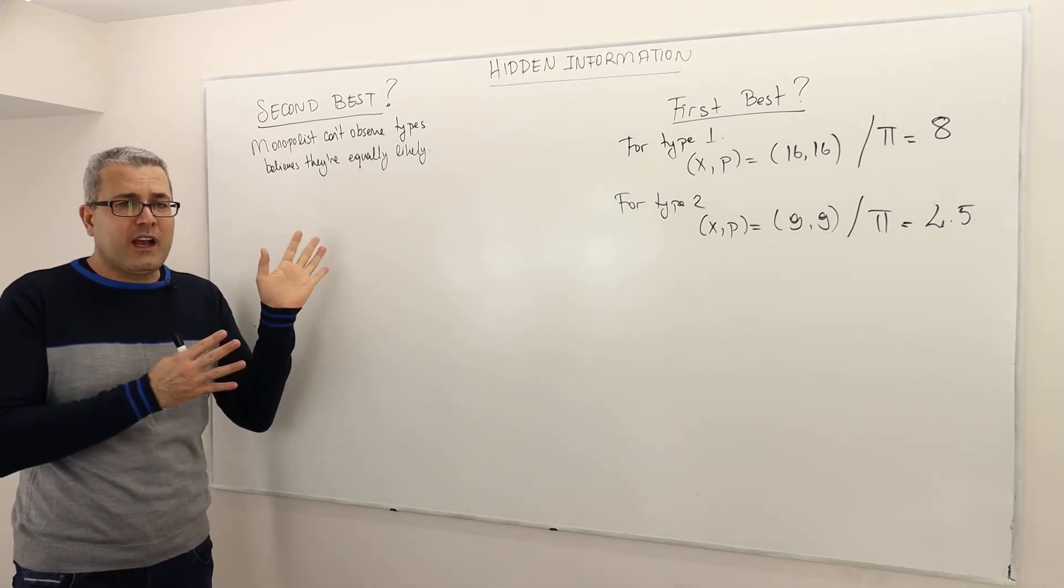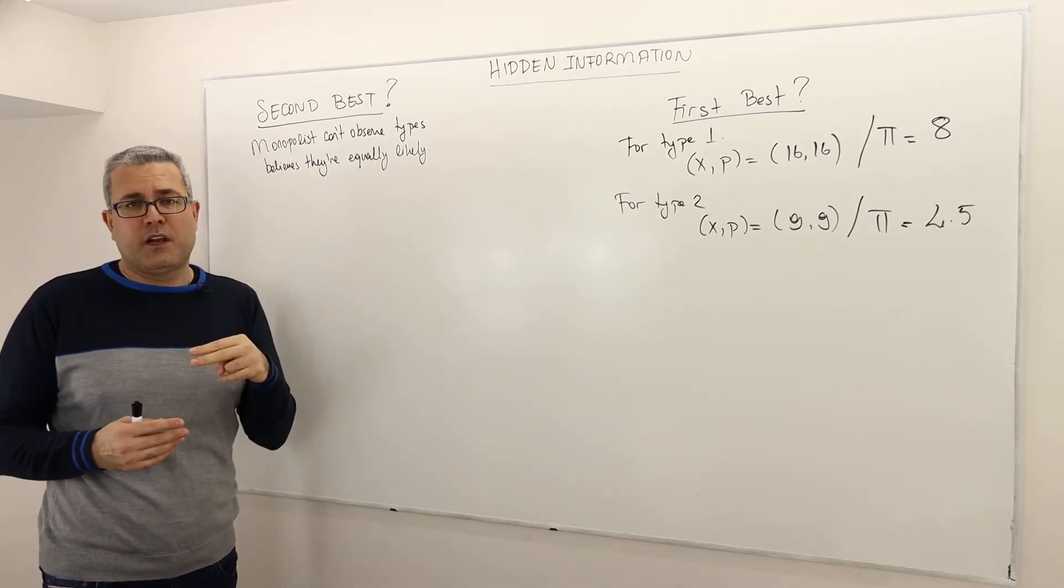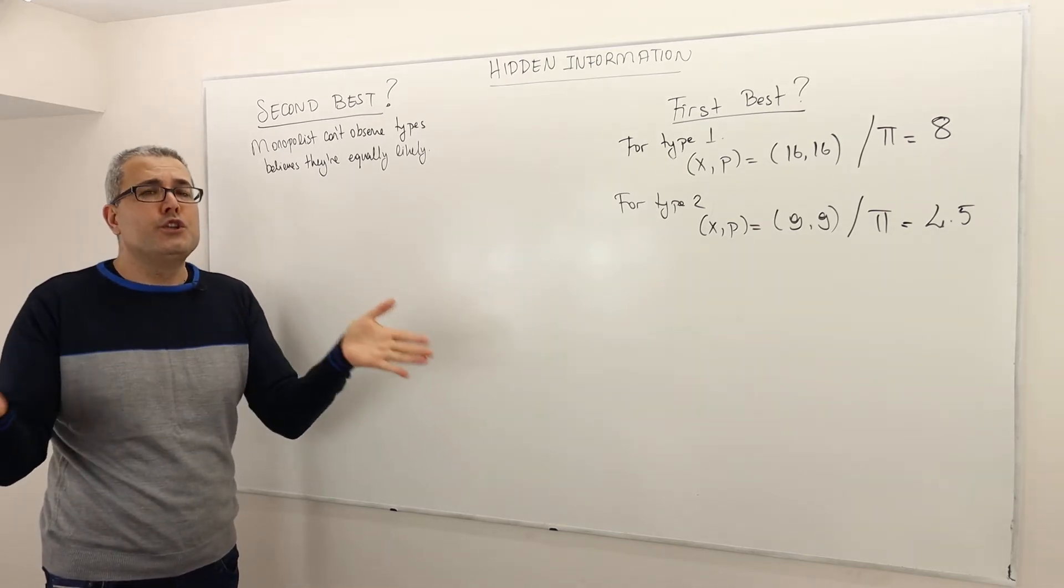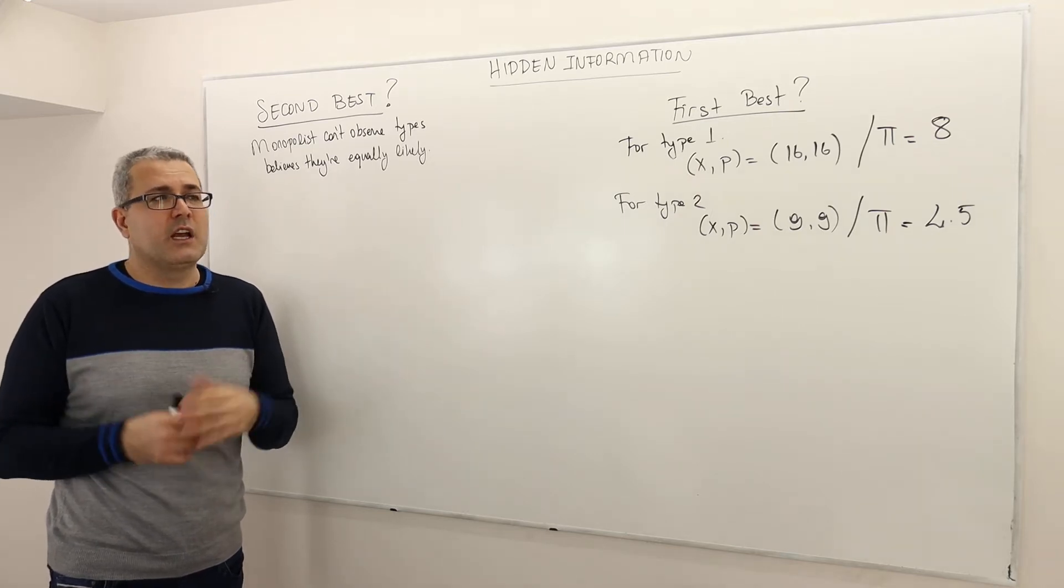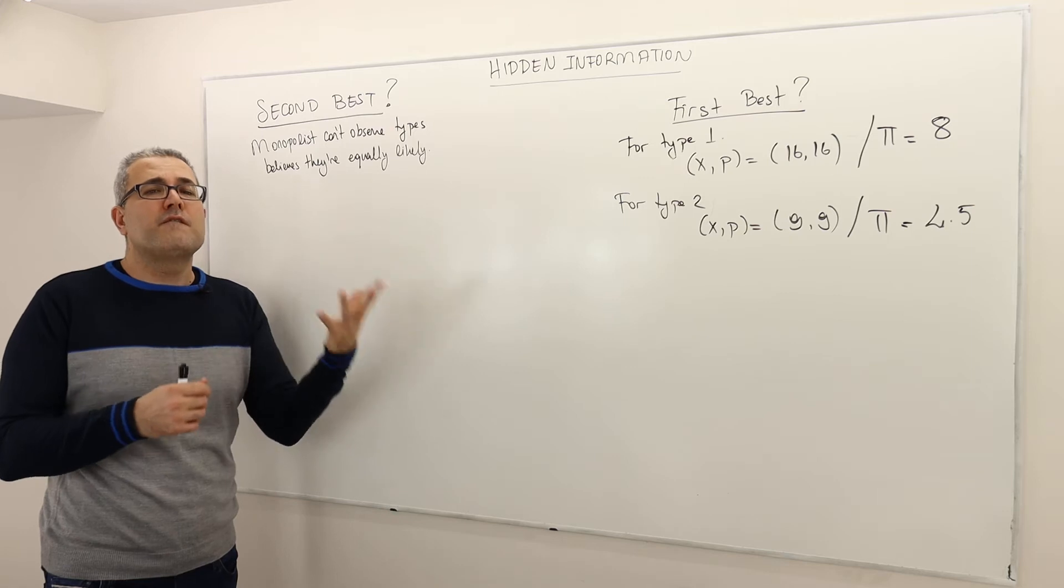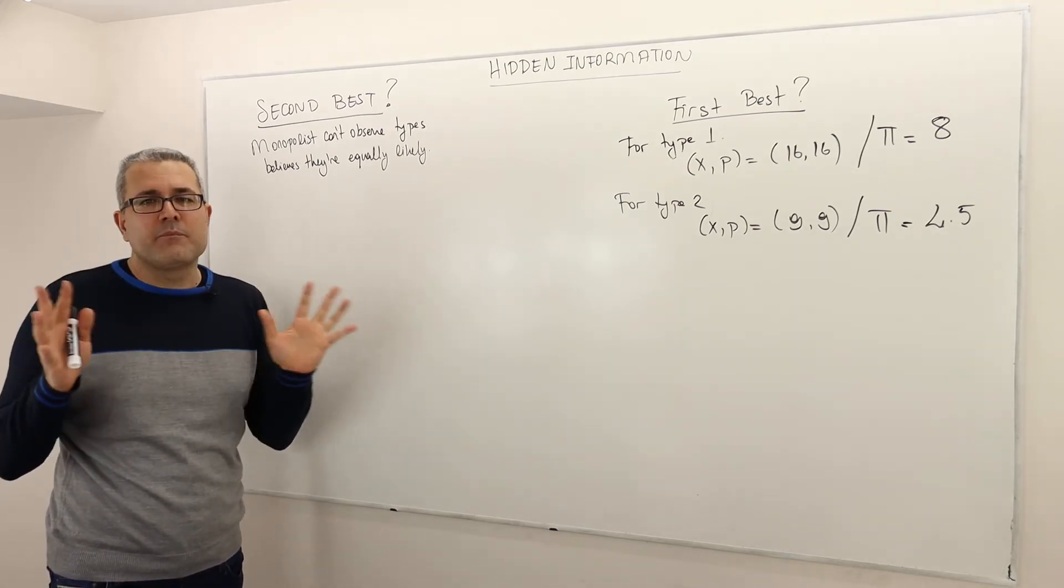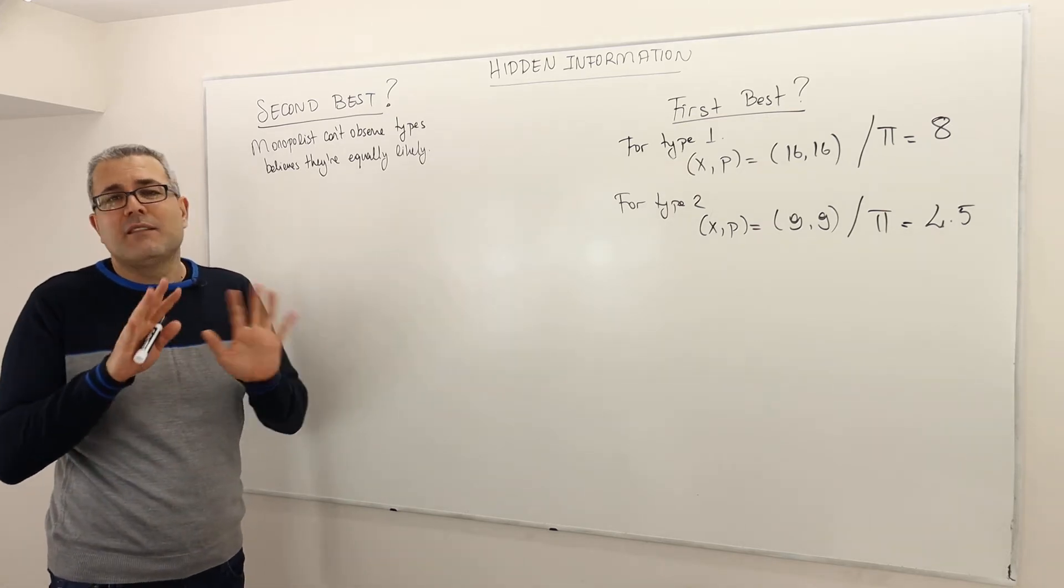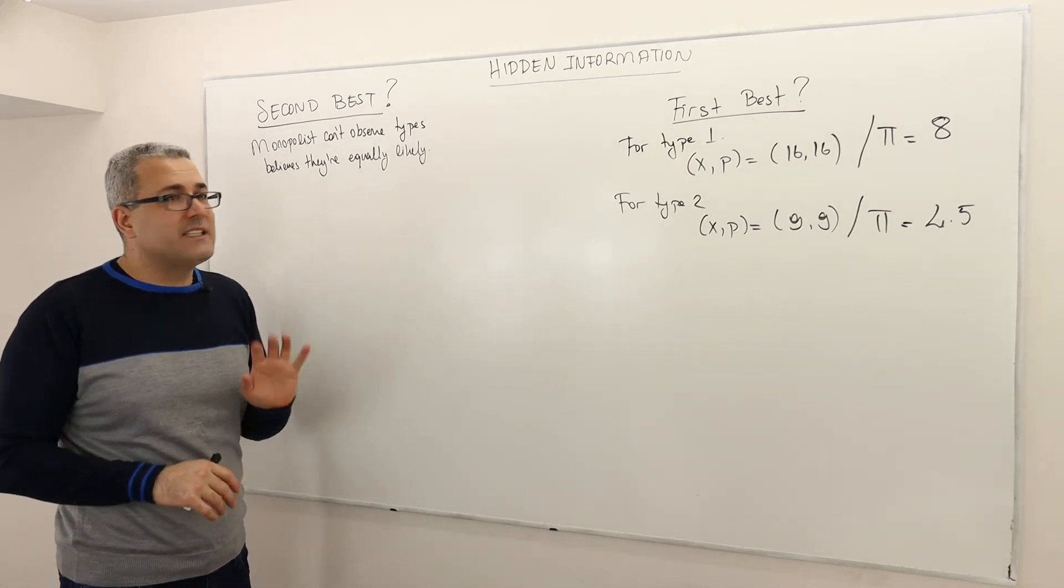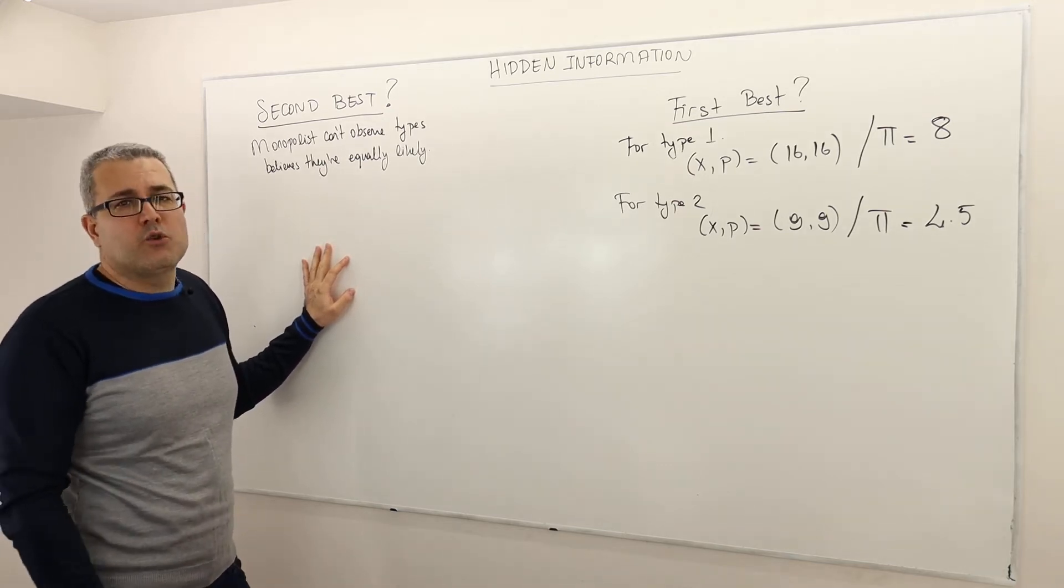Not one, not three, two packages. Why two? Well, because there are two types of customers. Remember type one customer and type two customer. So therefore, if you have two types of customers, you have to offer two bundles, two packages. If you have five types of customers, you have to offer five different packages. So that's sort of the idea.